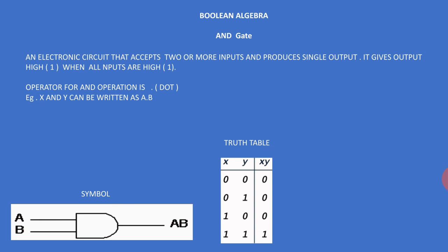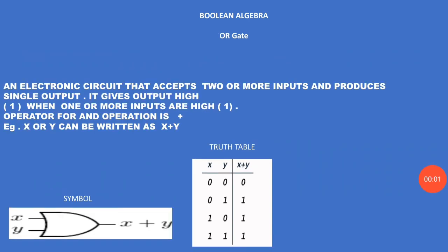In the truth table, X and Y are the input variables and the output is X AND Y, or X dot Y, or XY. You can observe in this truth table that when the combination of input variables is one-one — meaning all inputs are true — then the output is one; the rest of the outputs are zero.